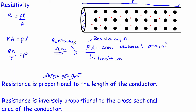Often in an exam, you'll be asked for a definition of resistivity. Rather than write a word definition, it's better to write down the equation and then define each term — stating that this is resistivity in ohm metres, this is resistance, this is cross-sectional area, and this is length. Basically just say what each term is.